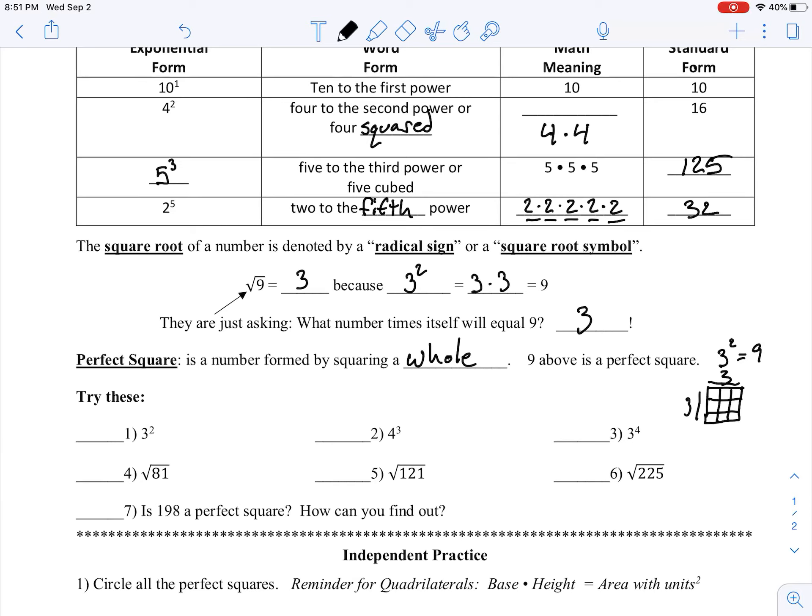Alright, so we're just going to try a couple examples here. So 3 squared we know from our example, and to the right there, is 9. For number 2, I'm taking my base of 4 and multiplying it together 3 times. So this is going to be 4 times 4 times 4. 4 times 4 is going to give us 16, and then 16 times that last 4 is going to give us 64 altogether there.